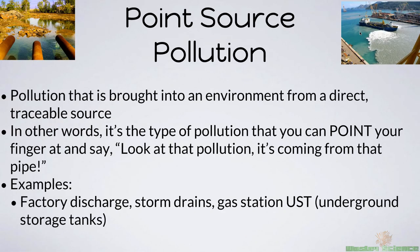There are two types of pollution: point source pollution and non-point source pollution. Point source pollution is brought into the environment from a direct, traceable source. In other words, you can point to the pipe and say there's pollution coming out of that pipe — there is contamination, some type of metal that can contaminate the environment, right there coming out of the pipe. Factory discharge is a great example. Storm drains, gas stations which have USTs — underground storage tanks — these are all point source pollution.